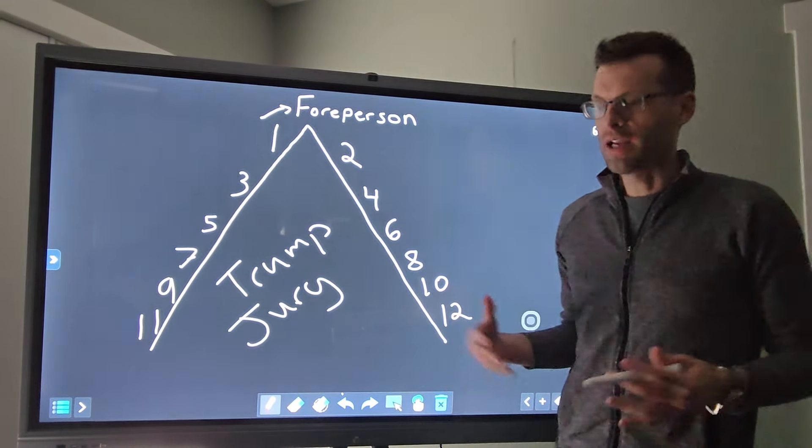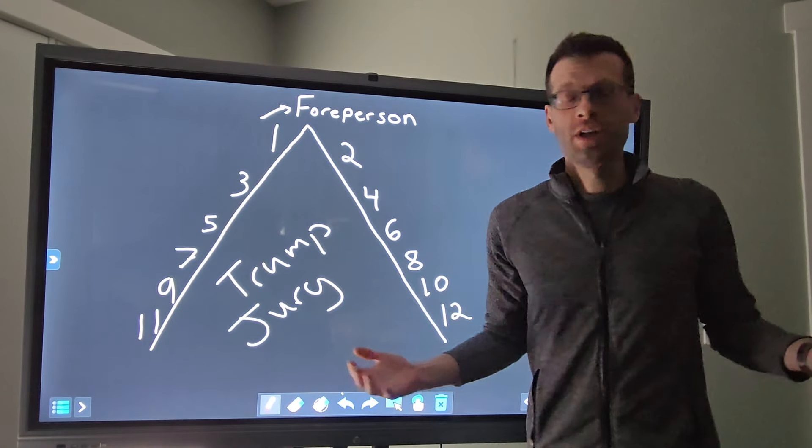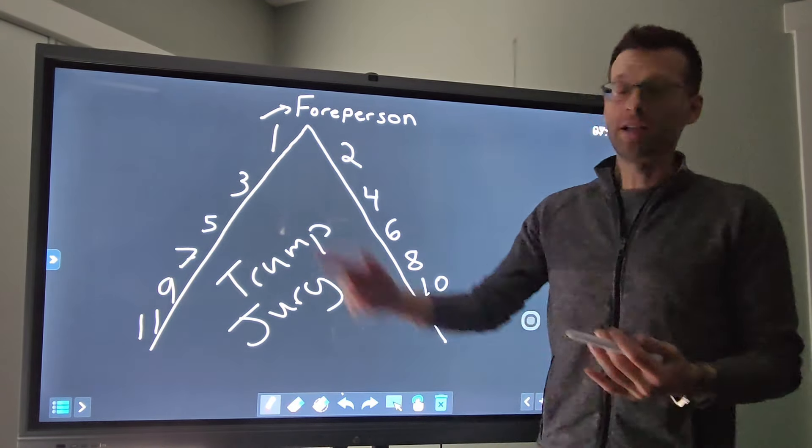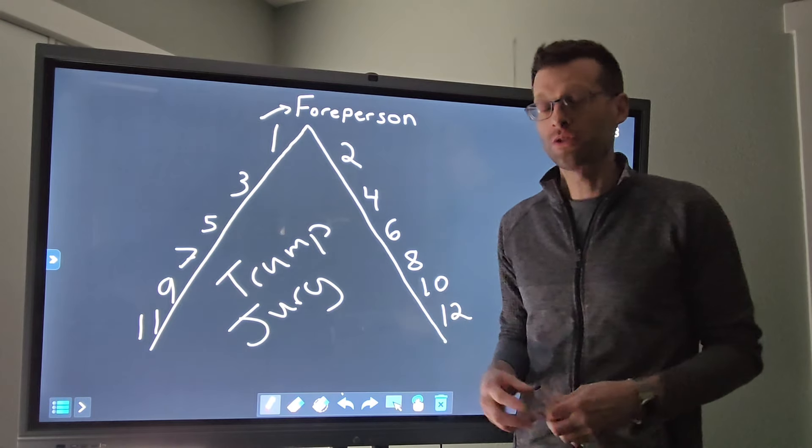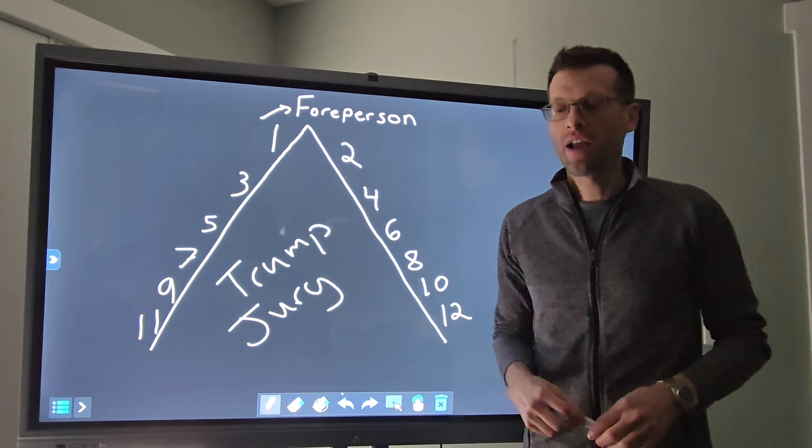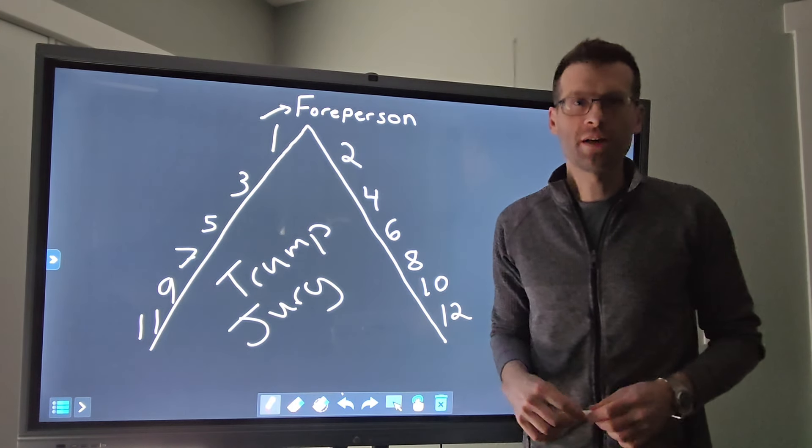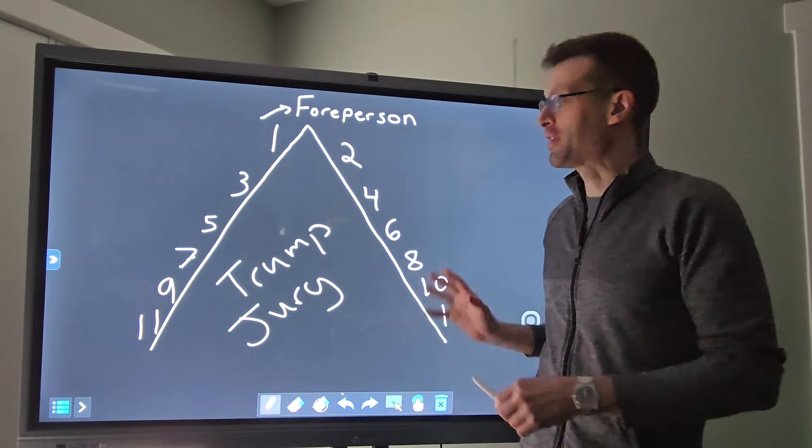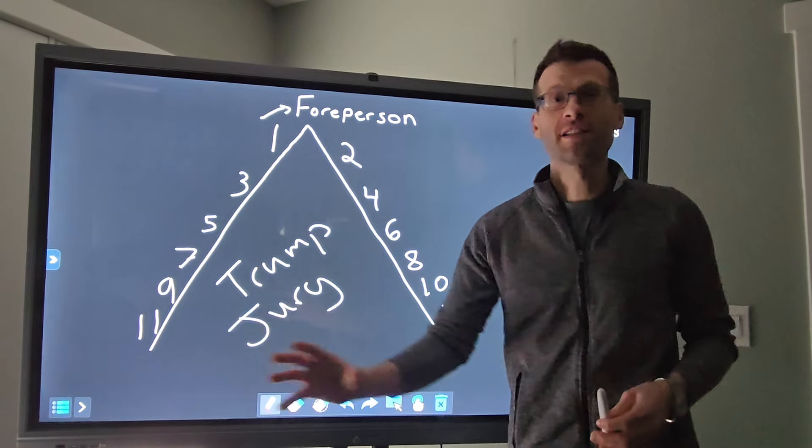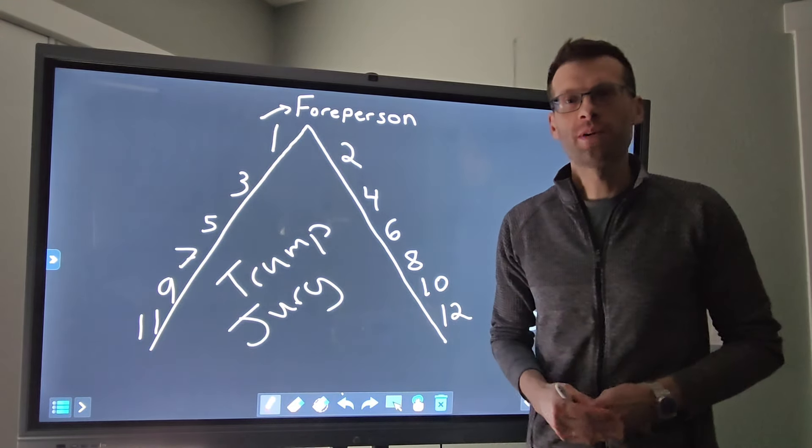They can vote, someone can volunteer themselves, they can appoint someone. In this case, there's two lawyers on the jury, and one of those lawyers is probably going to be the foreperson.